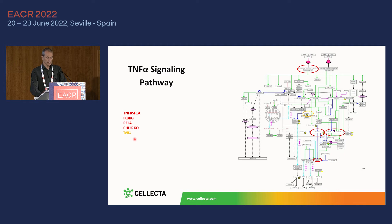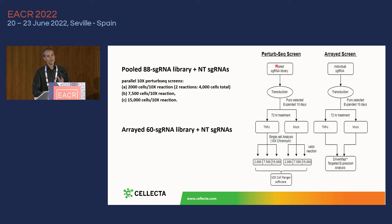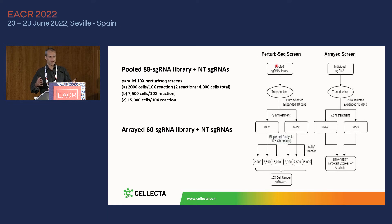We ran variations of the PerturbSeq screen and in parallel an array screen. In the array screen, instead of a pooled library, single sgRNAs are used — each sgRNA goes into a separate well and is analyzed one by one. This is the old-fashioned way, and it's important because we want to verify that PerturbSeq results are comparable to this standard approach.